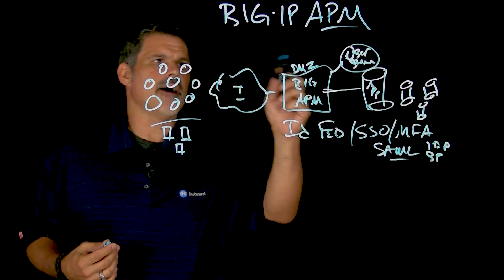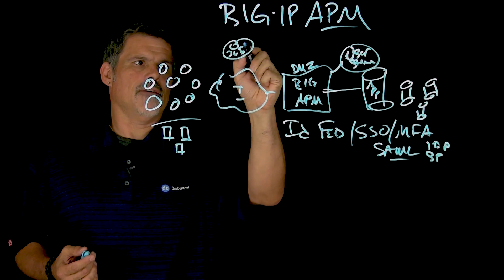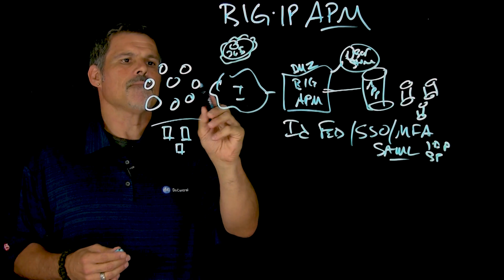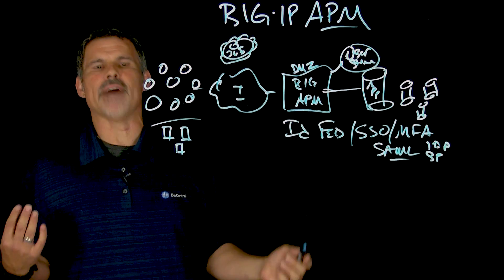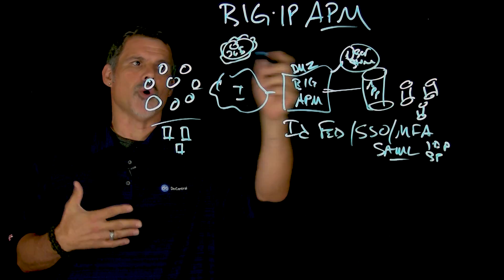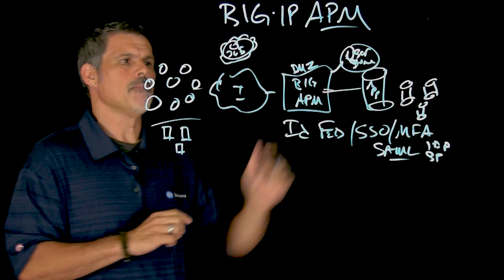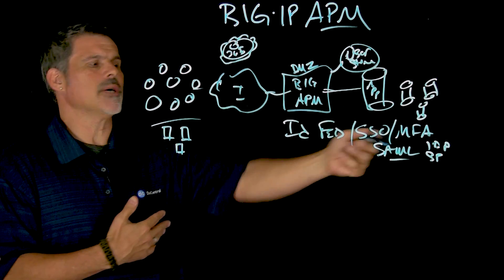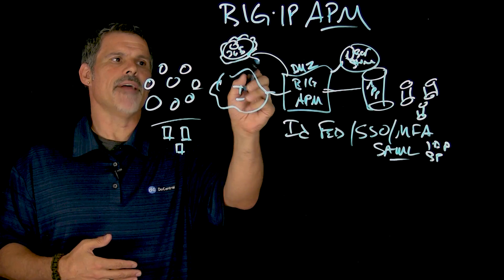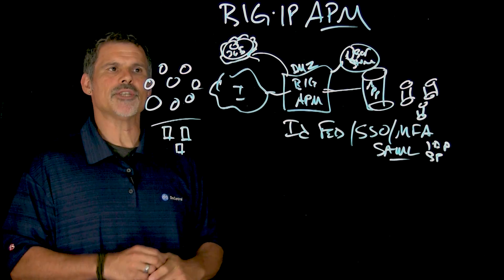In this instance, say you have Office 365 over here, out in the cloud, in that instance, user would come in, presented with a log-on page, APM would check the user store, because they're requesting access to Office 365, and APM, through a SAML assertion, will vouch for that employee, and send them over to the appropriate Office 365 resources.